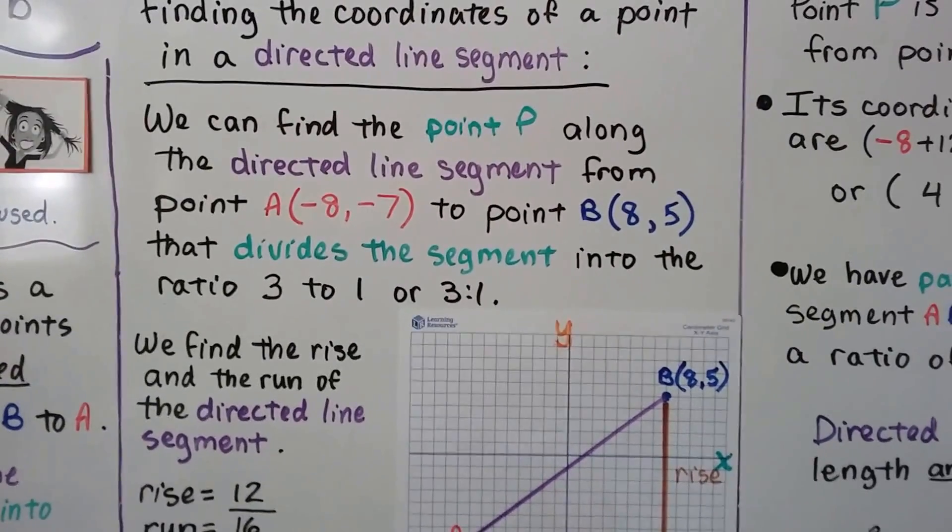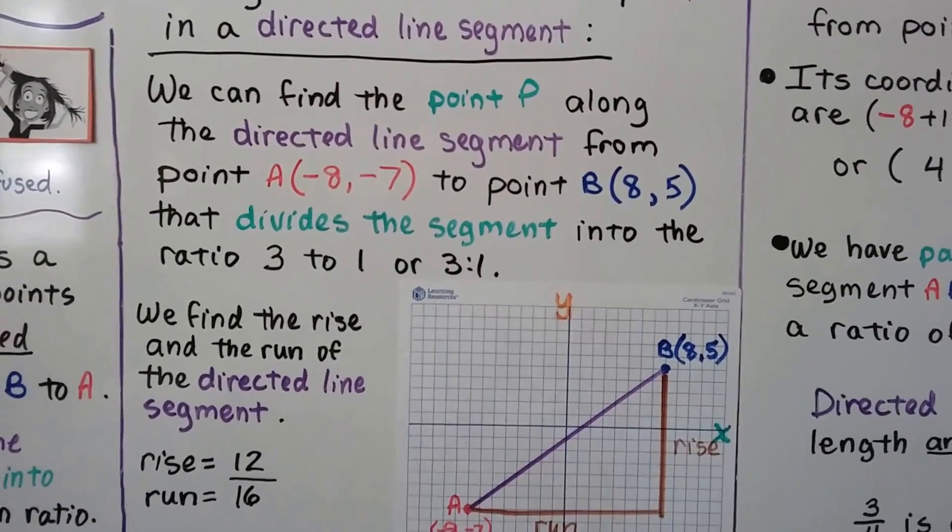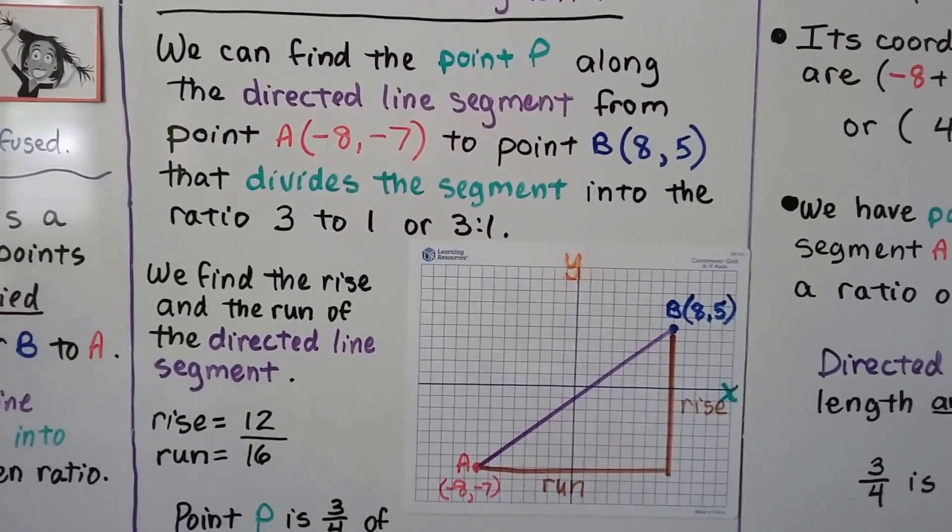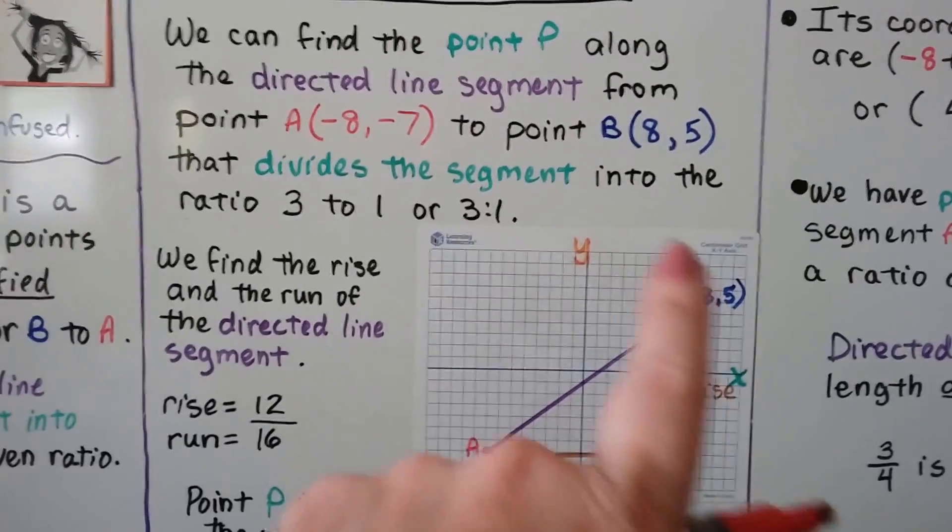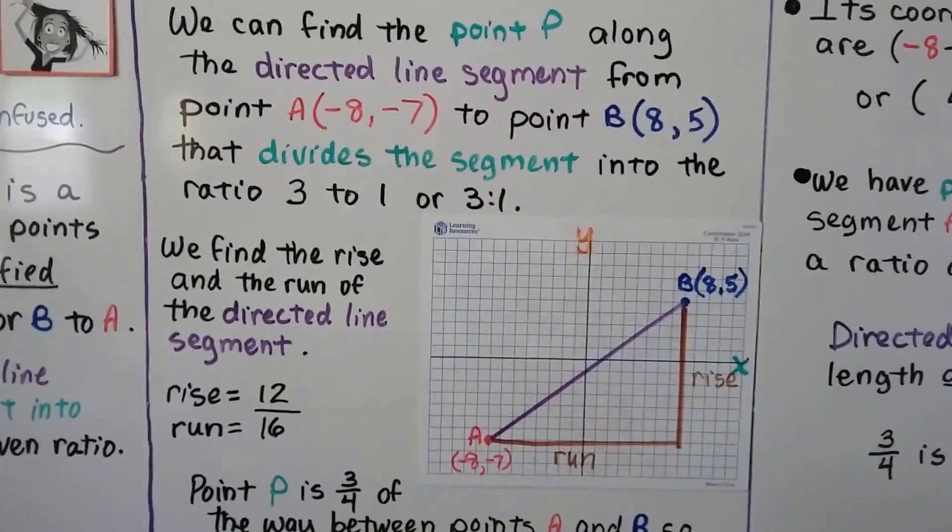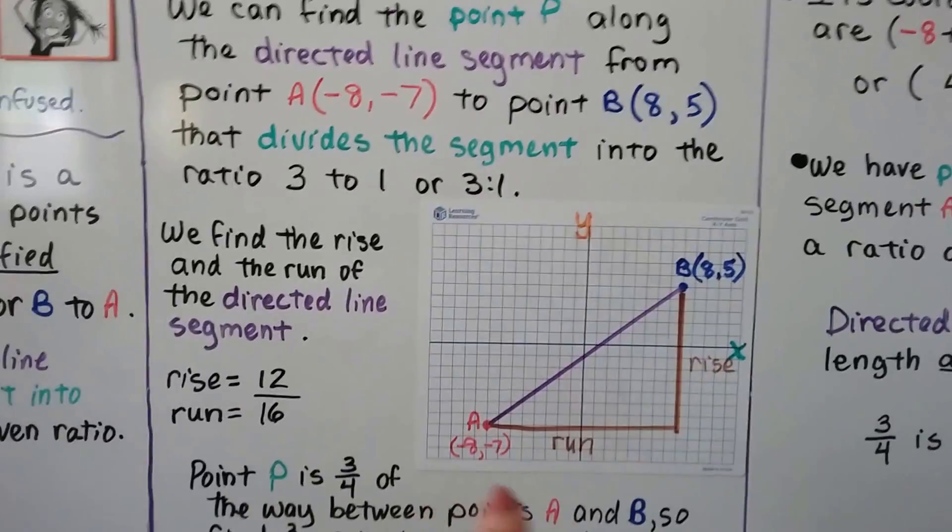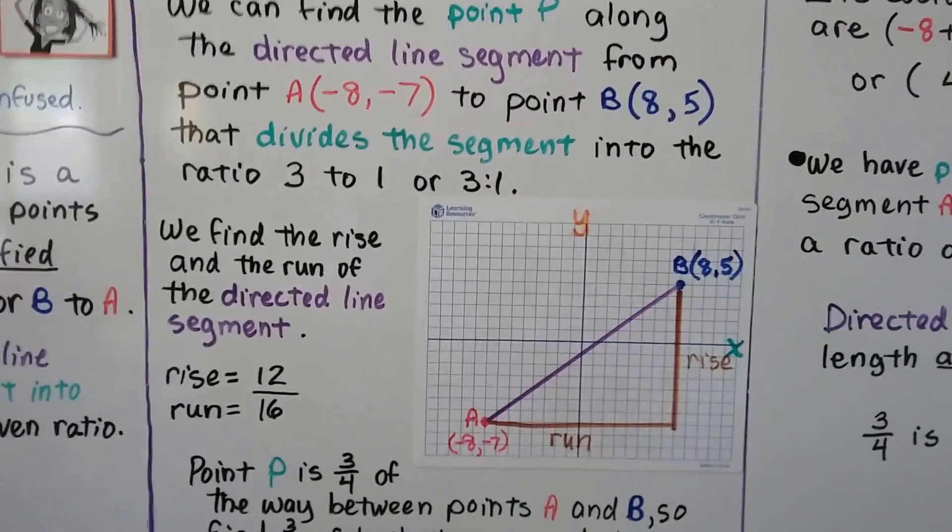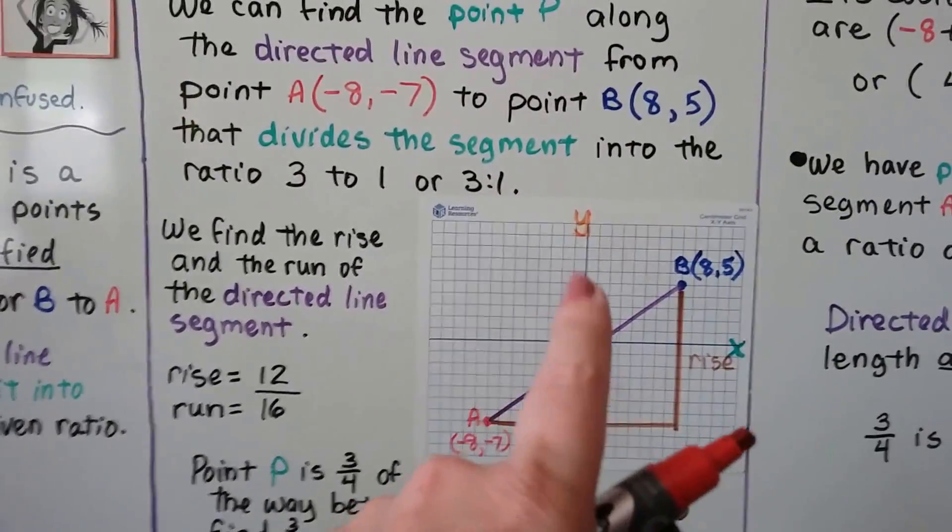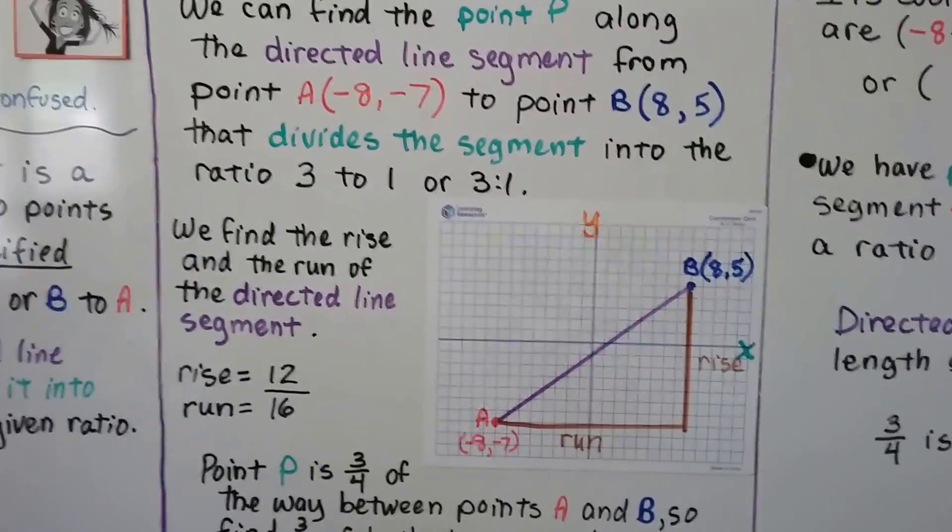Finding the coordinates of a point in a directed line segment, we can find the point P along the directed line segment, this purple line, from point A at negative 8, negative 7 to point B, 8, 5, that divides the segment into the ratio 3 to 1. We can also write it 3 to 1 like that.